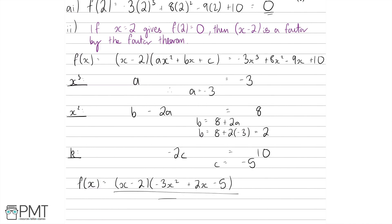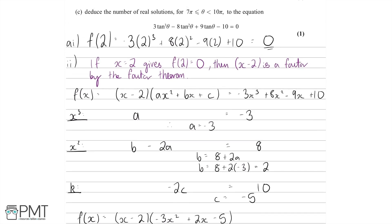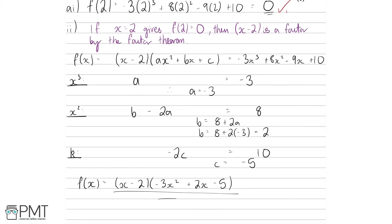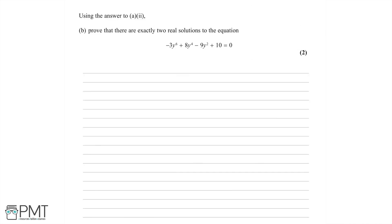That's it for this part of the question. In terms of the marking, you'll get one mark for finding f of 2 equals 0, one mark for finding both the x squared and x coefficients, and one mark for finding the constant — for a total of 3 marks. Now let's move on to part b. Using the answer to part a part 2, prove that there are exactly two real solutions to this equation.